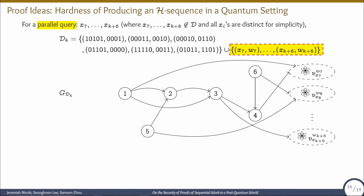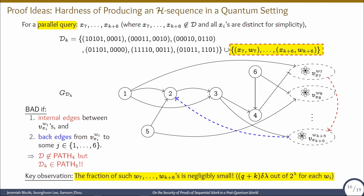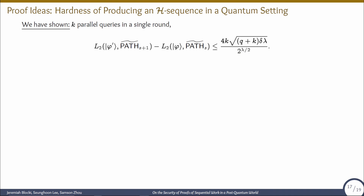For a parallel query with X_7 through X_{K+6}, so K parallel queries in a single round, the resulting database D_K adds all K pairs. We have one more bad case: since we have multiple superposition nodes, there is a chance of internal edges between v_{X_i, W_i}'s, and we still have the possibility of back edges. Another key observation is that the fraction of such W_i's is negligibly small for each i, so the fraction of bad databases after a parallel query is still negligible.